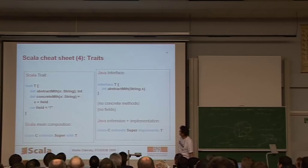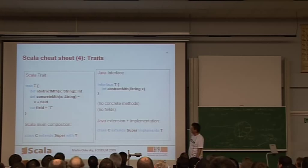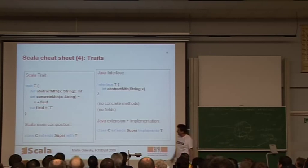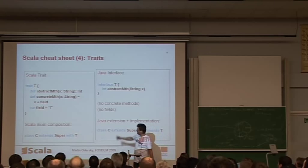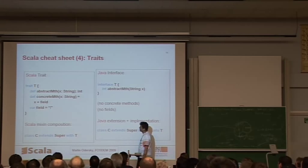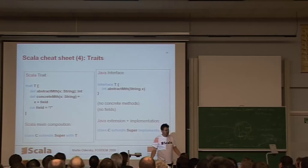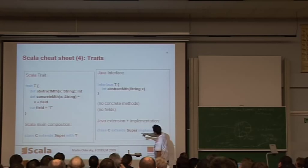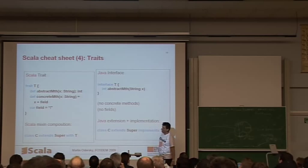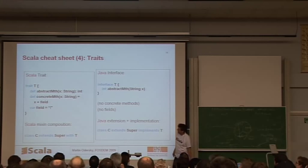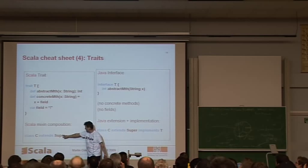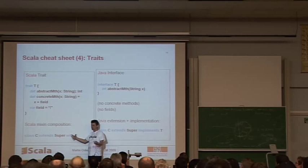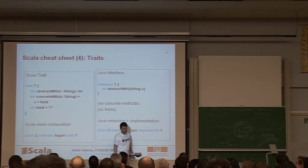Finally, traits. So on the right-hand side, you have a Java interface. It has abstract methods only. You can do the same thing in Scala, in a Scala trait. You can write abstract methods. But you can also add concrete methods. You can give them some implementations that then are inherited. And you can even define fields, like down here. And instead of having an interface implementation like that in Java, you just write in Scala class C extends. And then you have what we call mixin composition. You take the superclass and all the traits, and you mix them together with this with keyword.